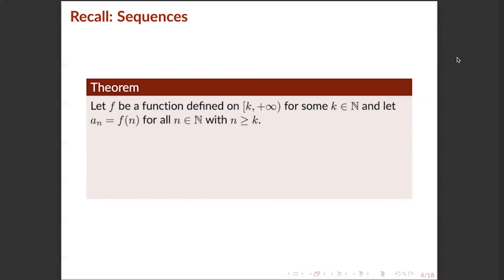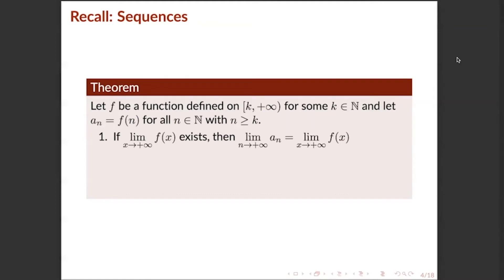We will now tackle a theorem regarding the limit of a sequence. Let f be a function defined on the interval [k, +∞) for some k in the set of all real numbers, and let a_n = f(n) for all n in the set of natural numbers with n ≥ k. Number 1: if the limit of f(x) as x approaches positive infinity exists, then lim(n→+∞) a_n equals lim(x→+∞) f(x).